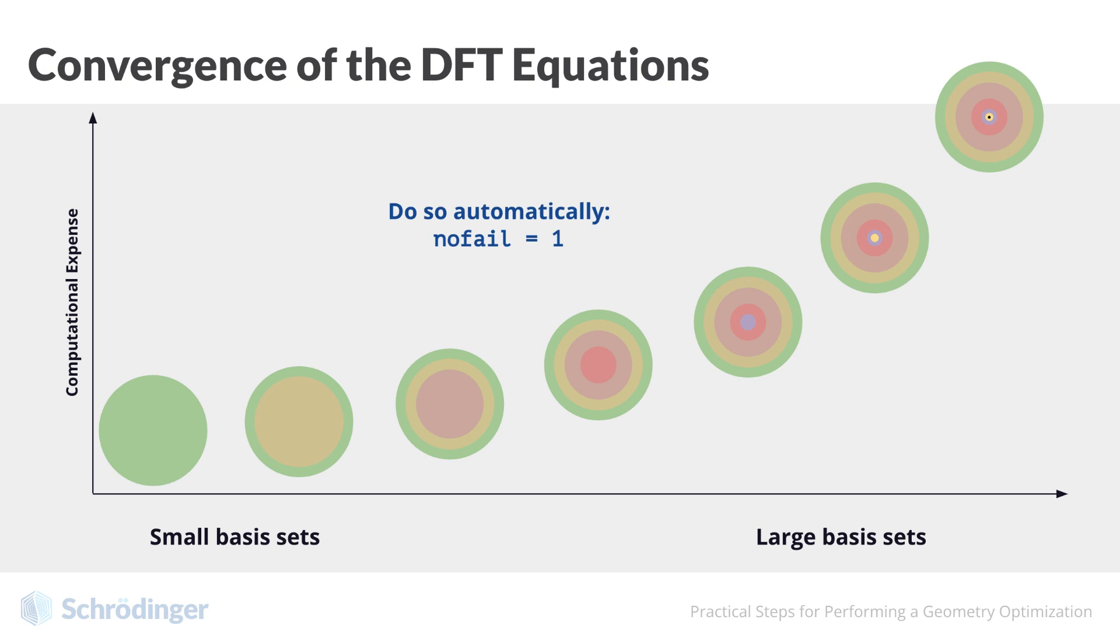If this procedure does not help, especially in calculations involving transition metal atoms, we can use a different initial guess for the solution of the DFT equations. This is achieved via a different setting of the keyword iguess.